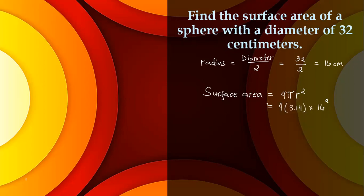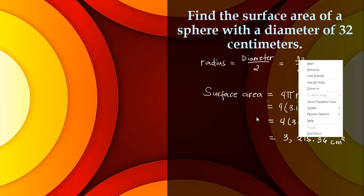Okay, so that equals 4 times 3.14 times 16 squared. 16 times 16 equals 256. 256 times 3.14 and then times 4 equals 3,215.36 centimeters squared. Thank you for watching.